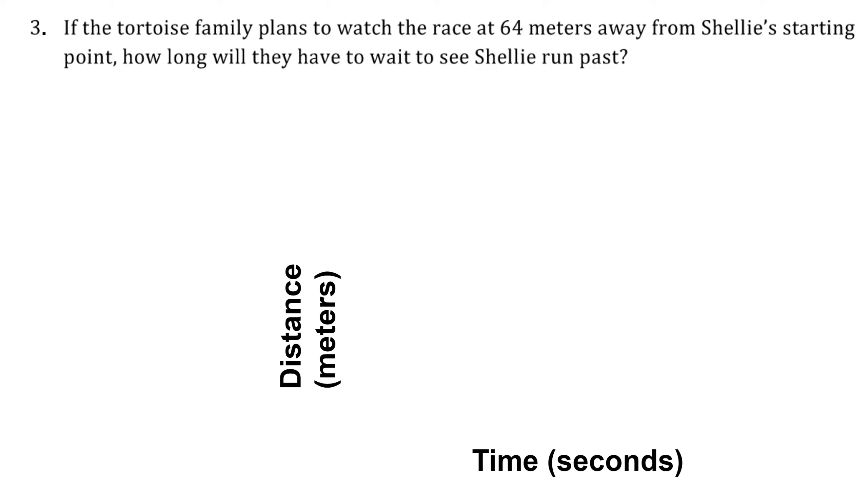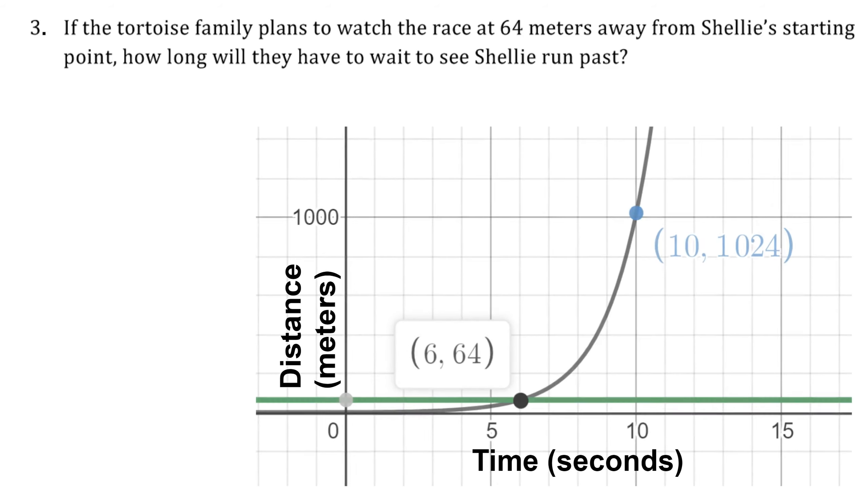So then we have a different type of question. If the tortoise family wants to watch at 64 meters away from Shelley's starting point, how long will they have to wait to see her come past? We can use the same graph, and we look at the y-axis at y = 64. If I extend that out, I can see that they'll have to wait 6 seconds.